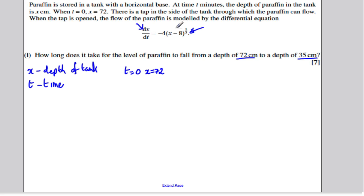It's going to involve solving this differential equation to get x as a function of time. Let's do that by separating variables and integrating everything with x on the left-hand side, everything with t on the right-hand side. I'm going to divide both sides by x minus 8 to the third and times both sides by dt. So I'm going to get 1 over x minus 8 to the third, which is x minus 8 to the minus a third dx, is equal to minus 4 dt, and I'm integrating both sides.